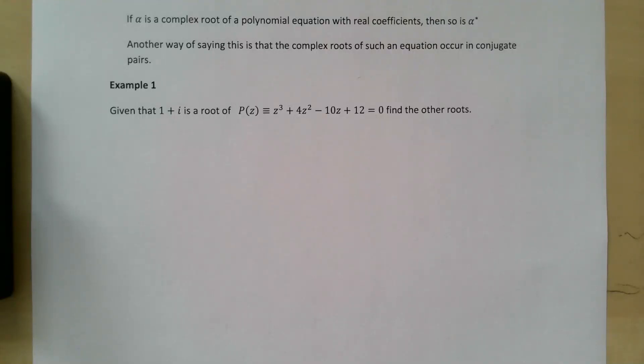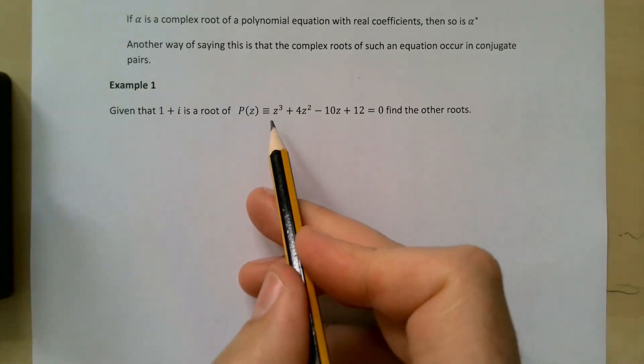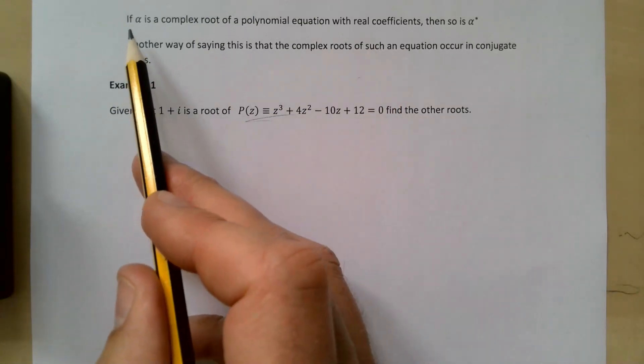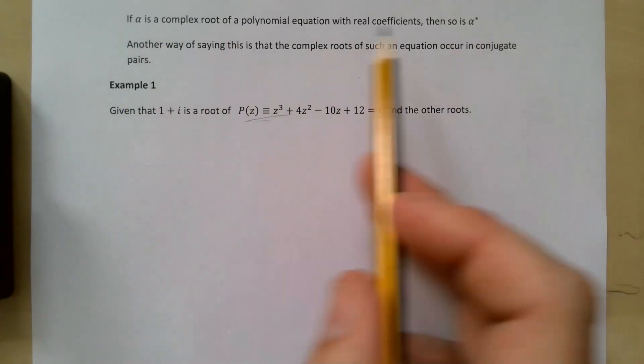This is some AS Further Maths, complex numbers. This is the final topic in the complex number unit: solving polynomial equations with real coefficients. Here we have a polynomial equation with real coefficients, with the real numbers there, and we can work out some of the roots.